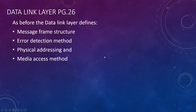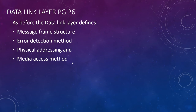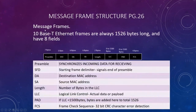Moving to the data link layer for wired Ethernet: frame structure, error detection, addressing, and media access methods. We look at things a little differently here when talking about specific transmission media. For wired Ethernet — 10BaseT — Ethernet frames are always 1526 bytes long and have eight fields.